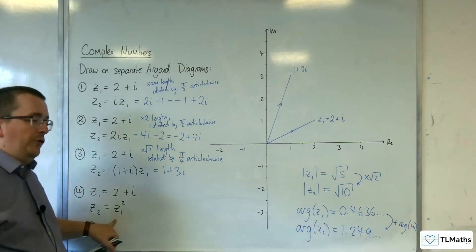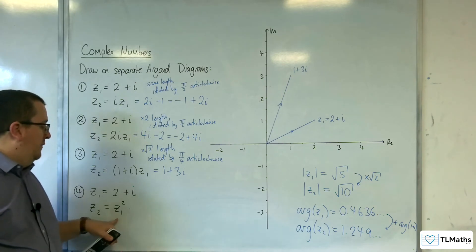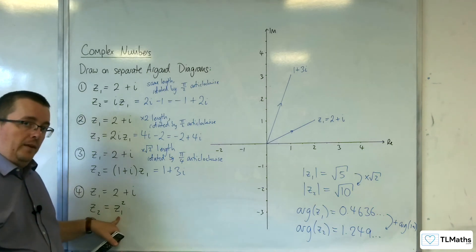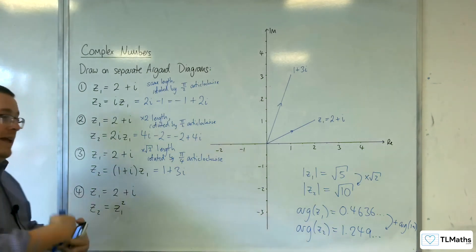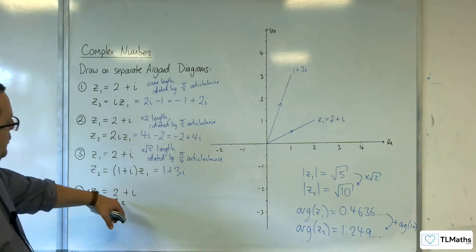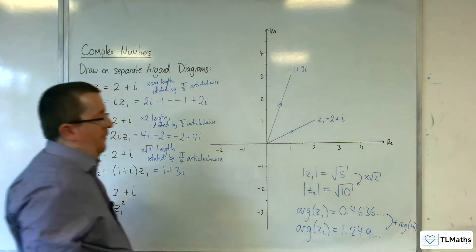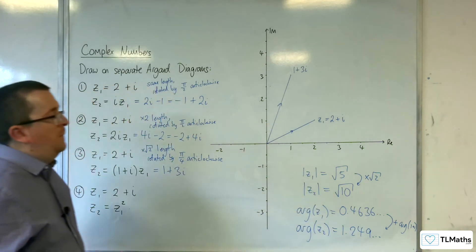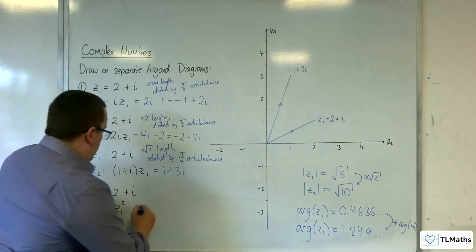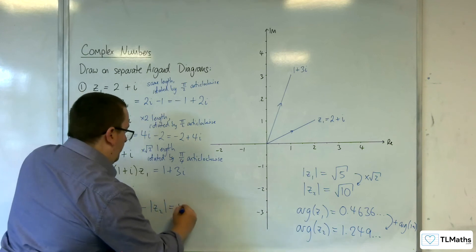So 2 plus i, and we've got 2 plus i squared. Let's hypothesize what the answer should be to start off with. If we can get this into modulus argument form first, and then we can work backwards, we can see if we get 2 plus i squared. So 2 plus i had that modulus of root 5. If we multiply that by root 5, we would just get 5. So we reckon this should have a modulus of 5.